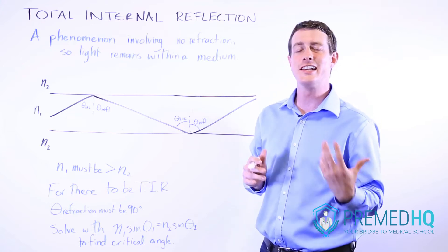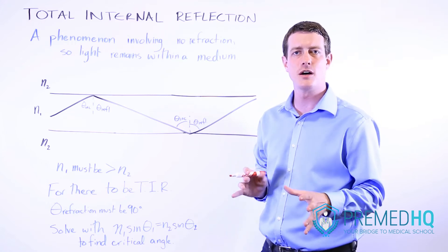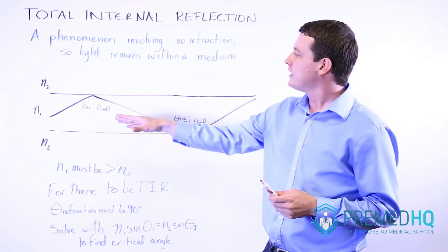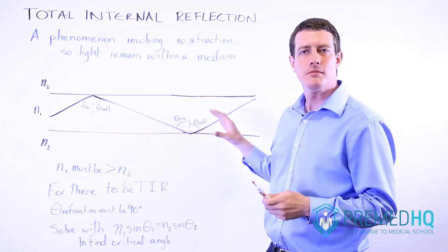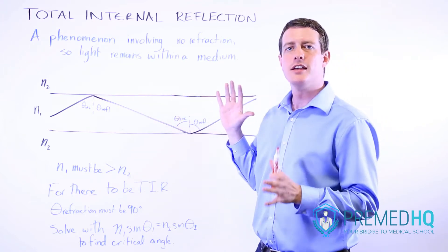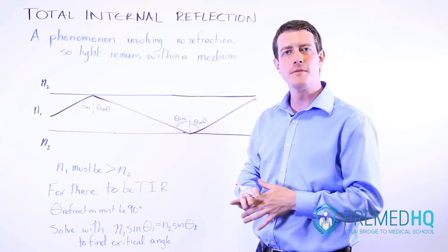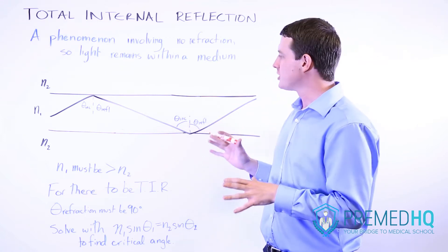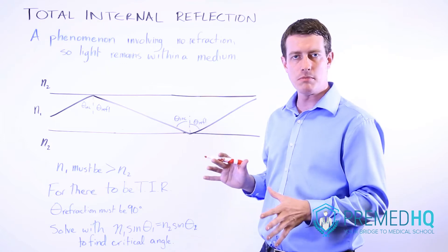Total internal reflection is an interesting and commonly tested phenomenon where light remains within a medium and doesn't escape it because there is no refraction going on. In order for total internal reflection to happen, a few conditions need to be met.